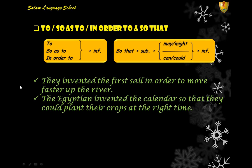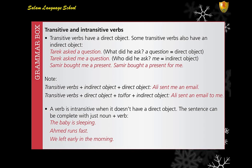Now let's check transitive and intransitive verbs. A transitive verb has a direct object or an indirect object. Some transitive verbs also have an indirect object. For example: 'Tarik asked a question' — 'a question' is the direct object. In 'Tarik asked me a question' — 'me' is the indirect object. So a transitive verb can be followed by just one object or two objects.